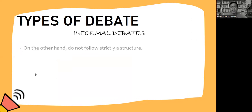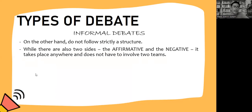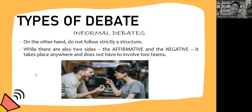We also have informal debates, which on the other hand do not follow strictly a structure. It takes place anywhere and does not have to involve two sides. For informal debates, it may take place between two or more people arguing for or against a certain issue. An example would be two friends deciding where to eat their lunch for that day — that's an example of informal debates.